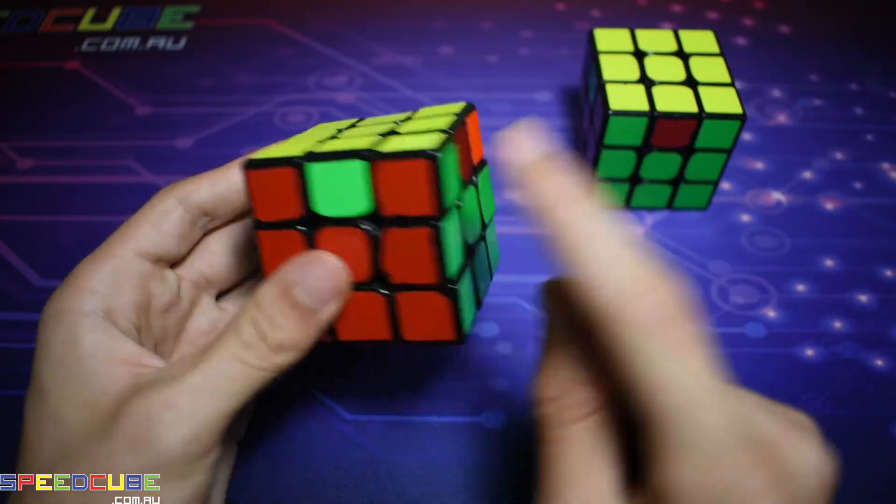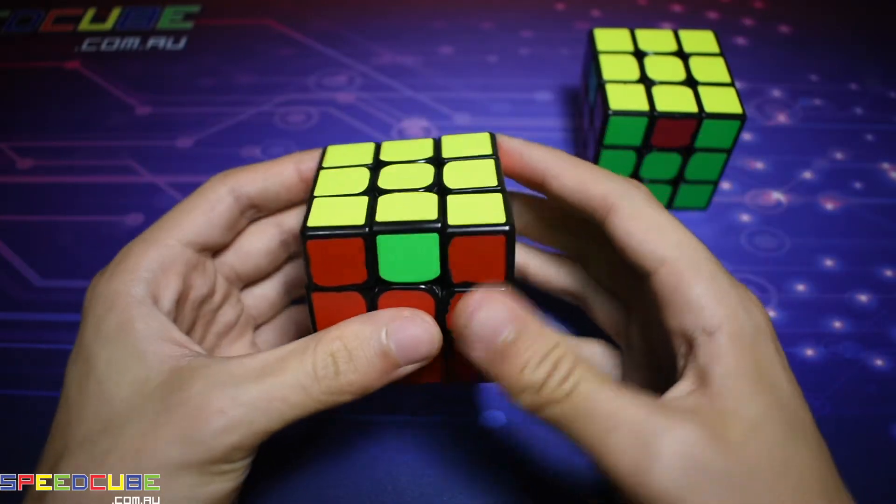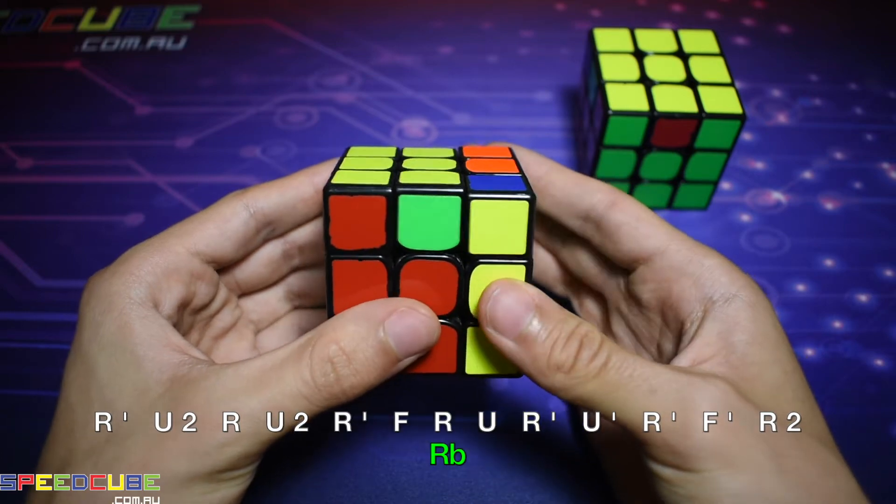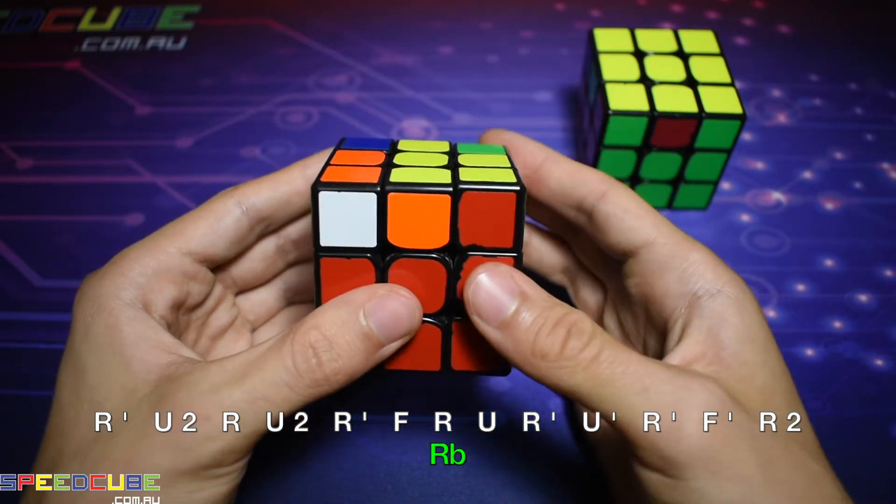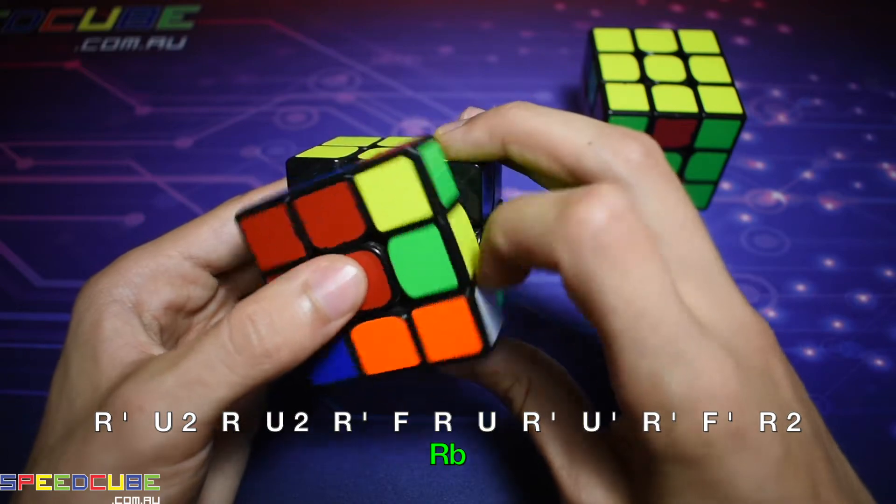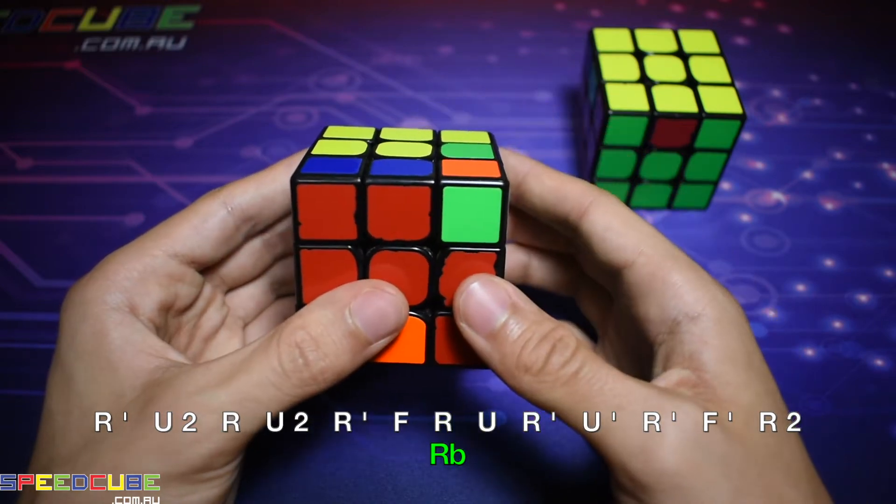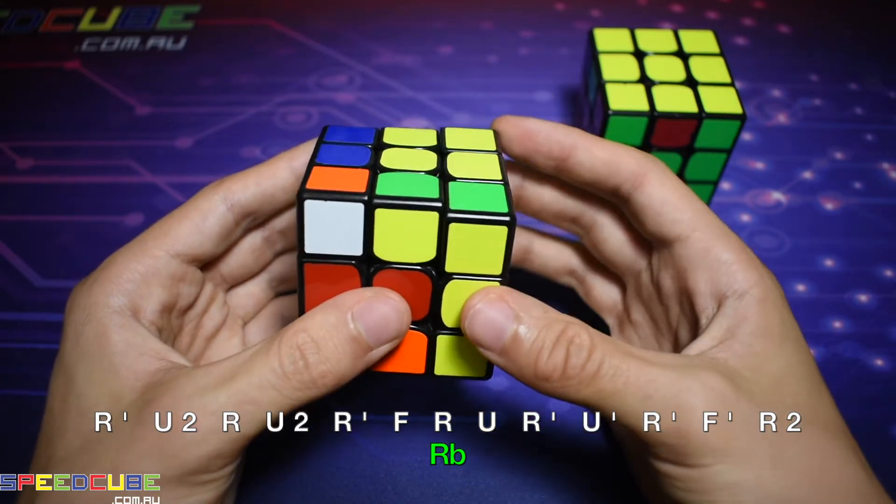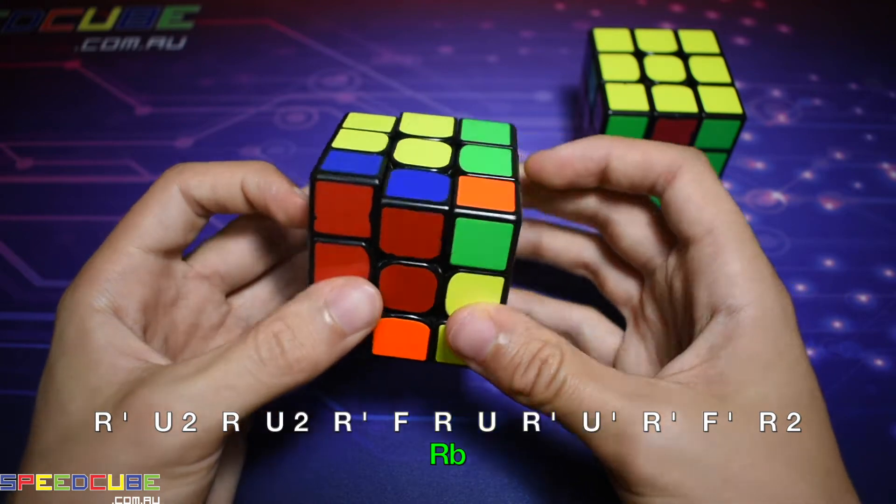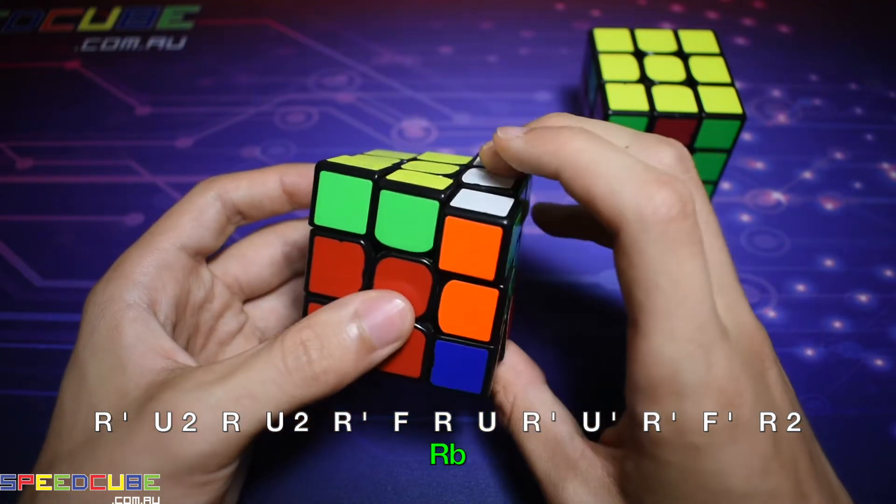So for this one, when this needs to go to the right, you do this: First, right inverted, up 2, right, up 2, right inverted, front, right, up, right inverted, up inverted, right inverted, front inverted, right 2.